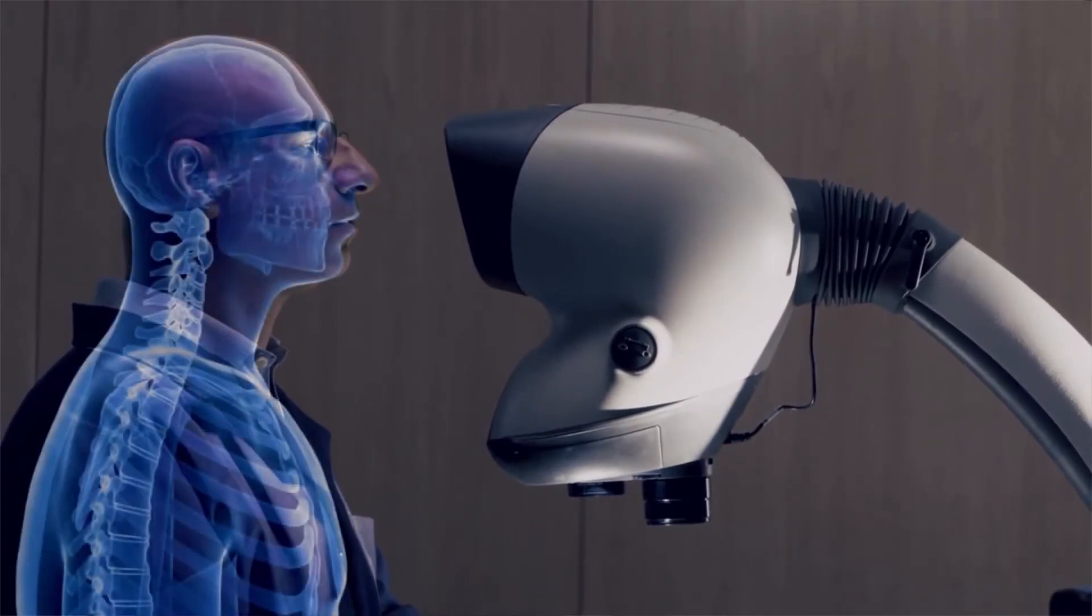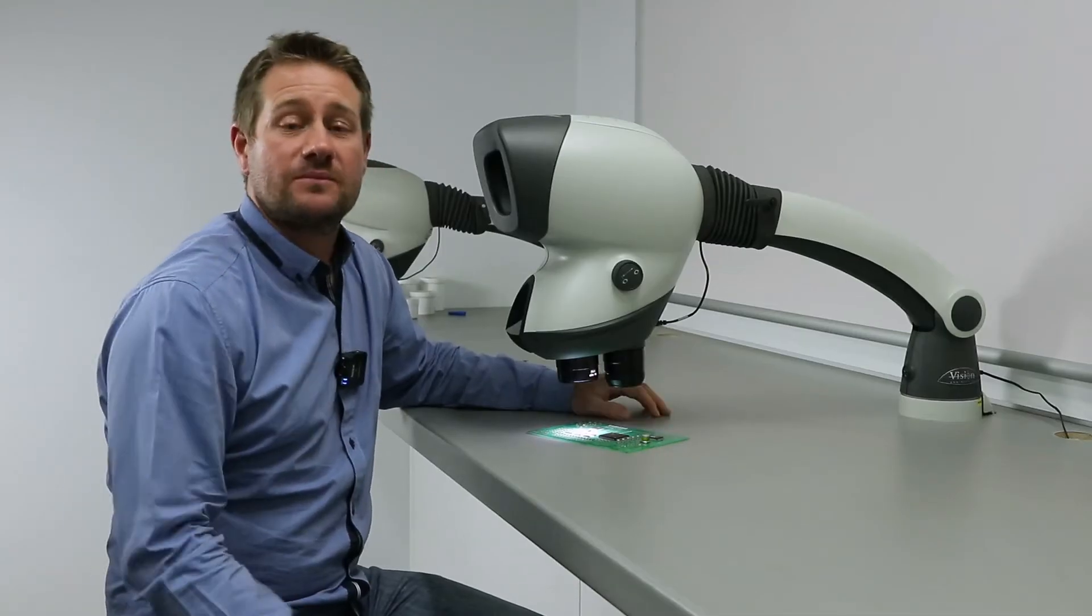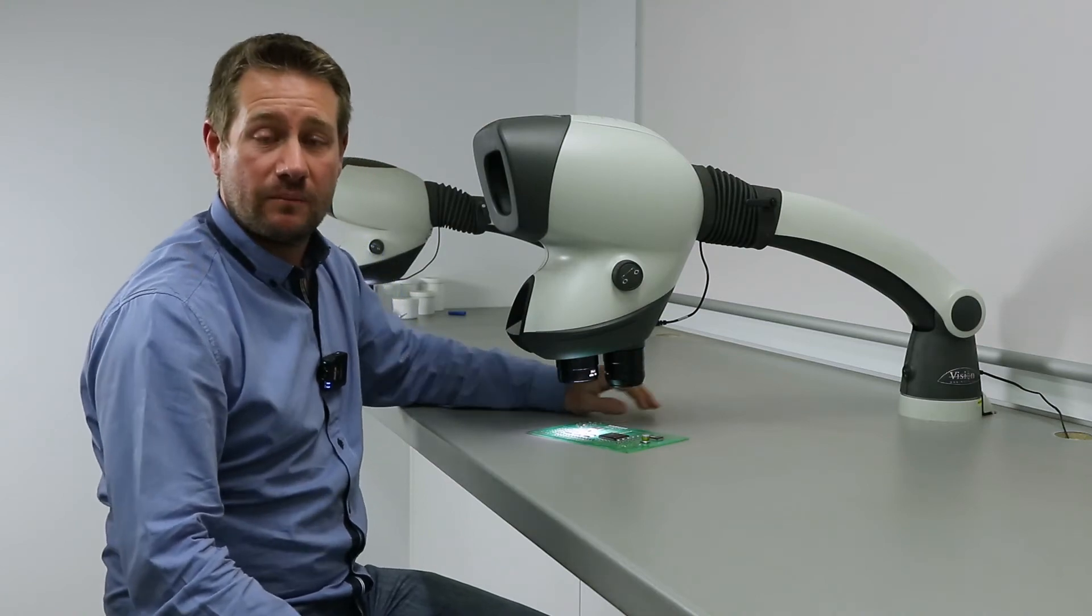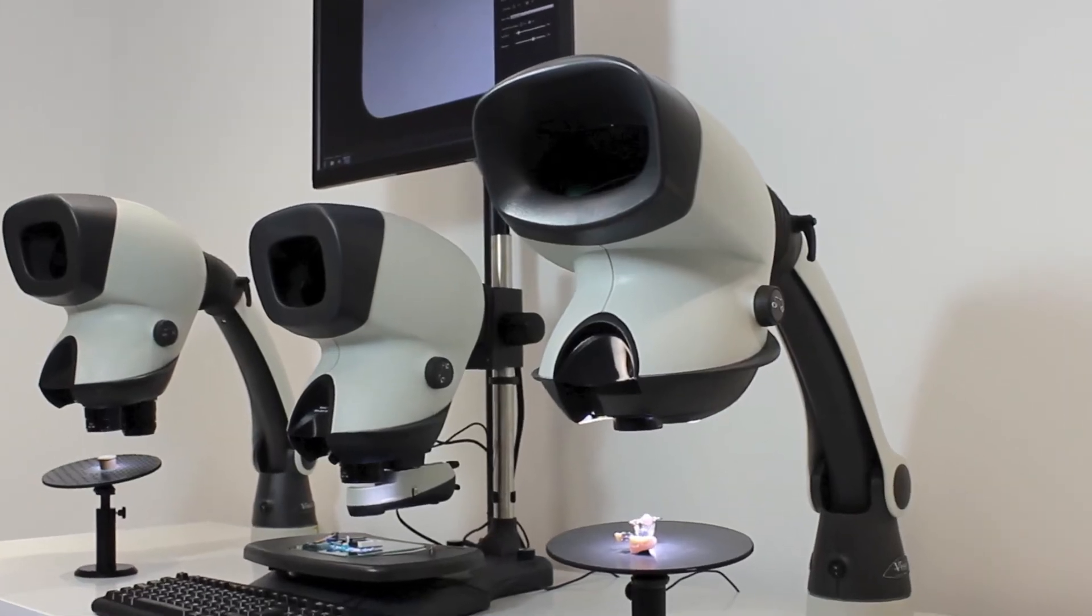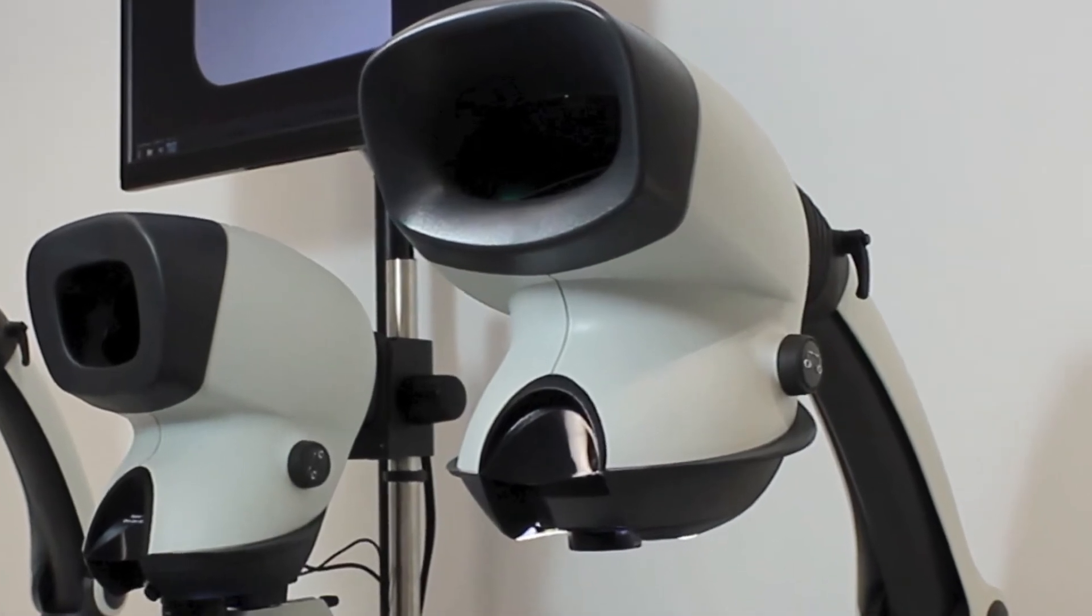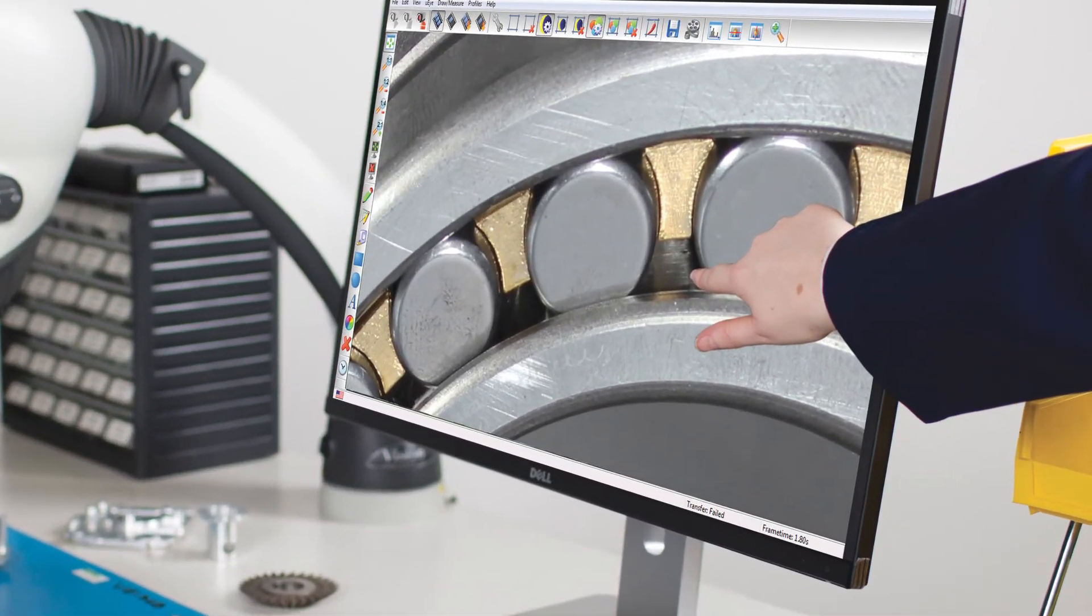I'm not hunched over like a traditional microscope. The Mantis comes in three models. We have a Mantis Compact like the one behind me, we have the Mantis Elite, and we have the Mantis Elite Cam HD with an available camera.